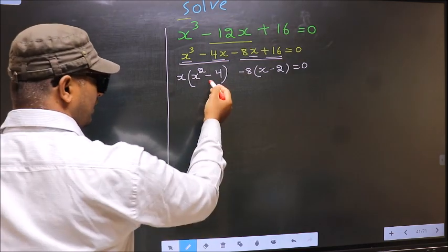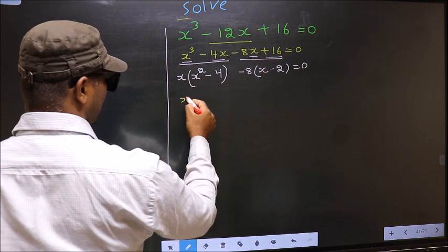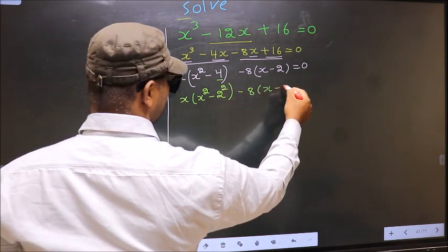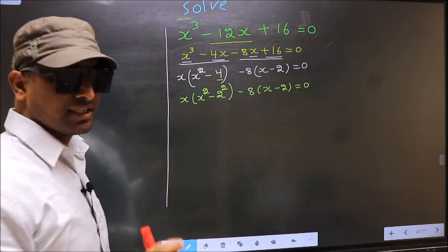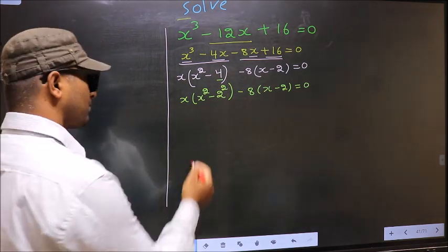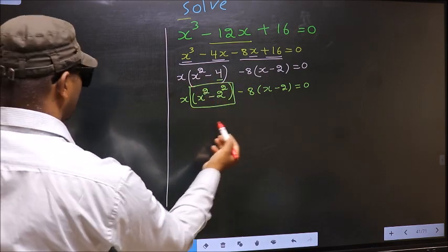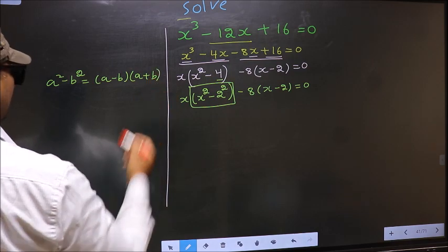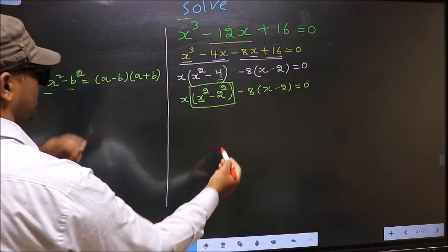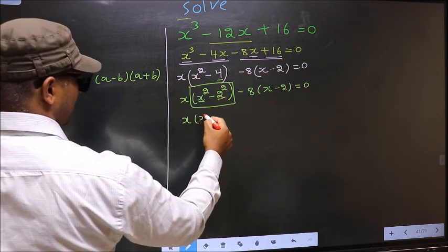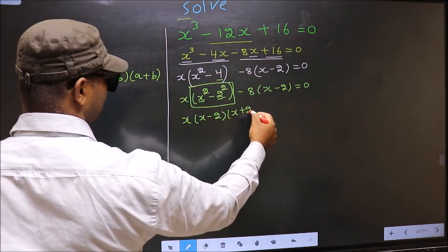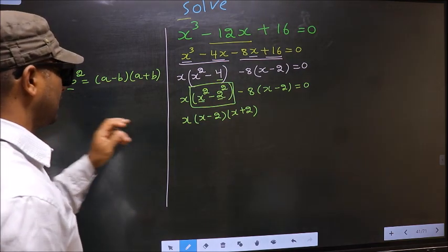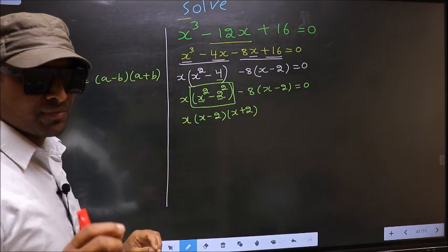Now observe — here I have x squared minus 4, so I change 4 to 2 squared. Now we can apply the formula a squared minus b squared, which is a minus b times a plus b. In place of a you have x, in place of b you have 2. So this becomes x minus 2 times x plus 2.